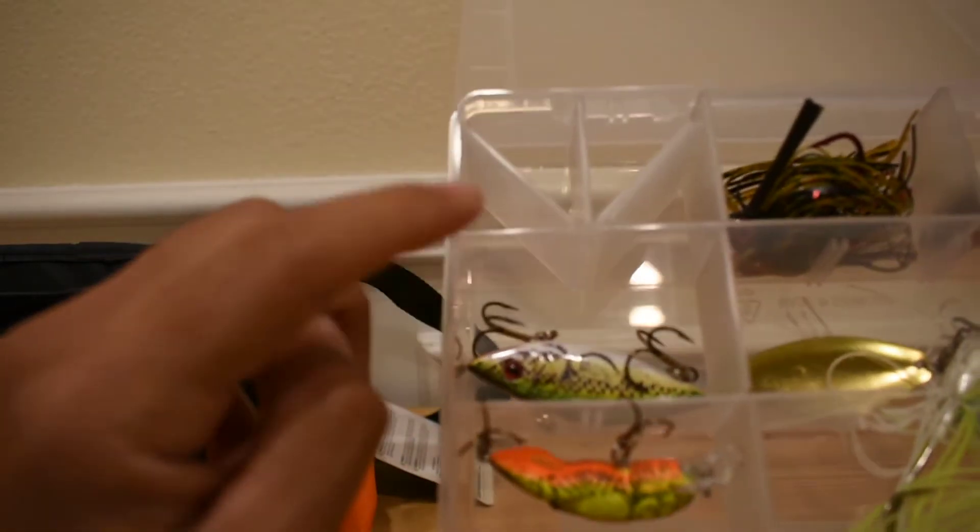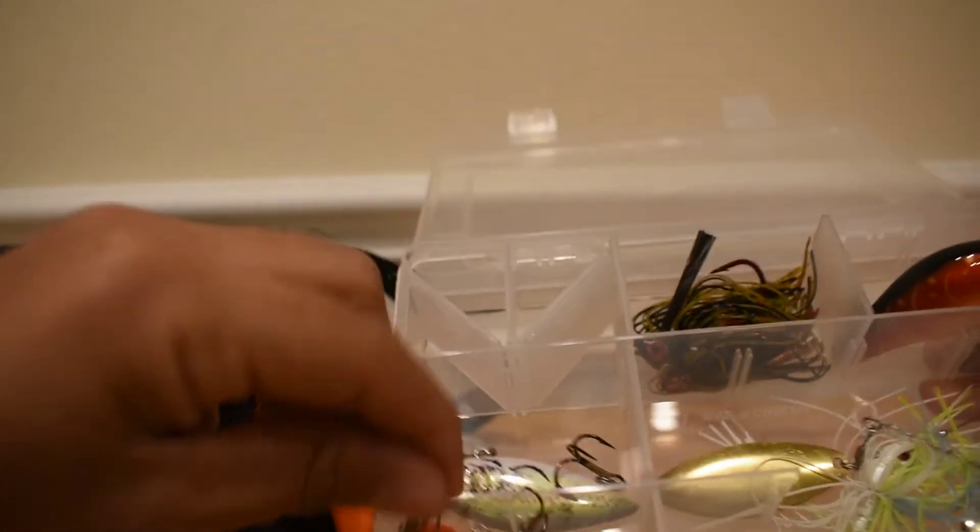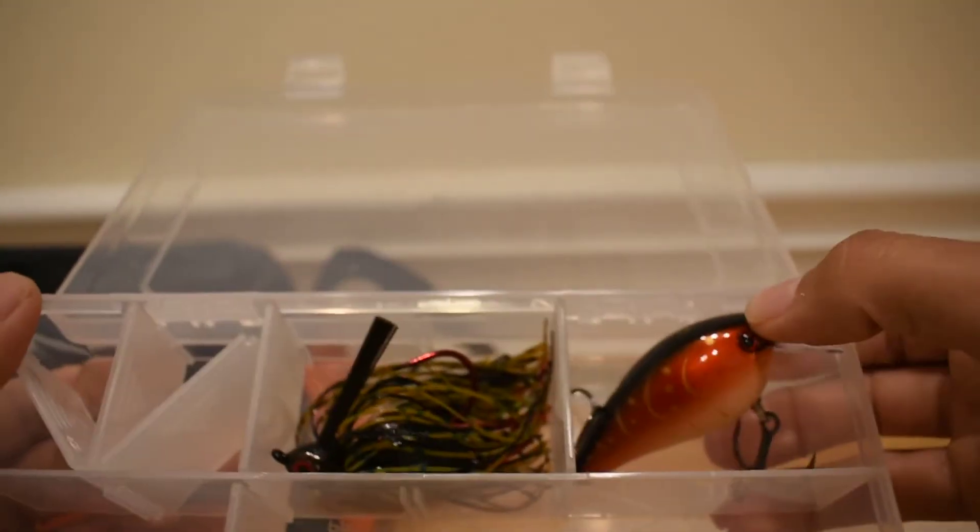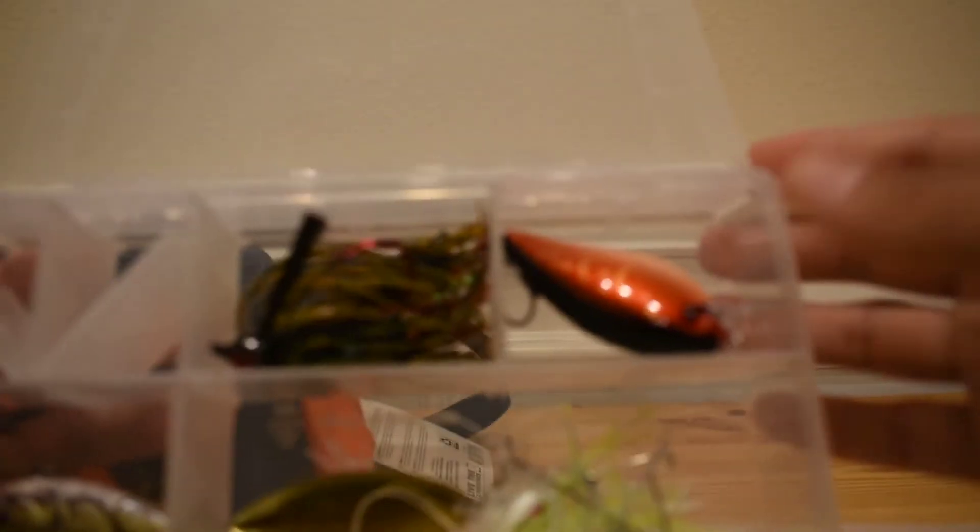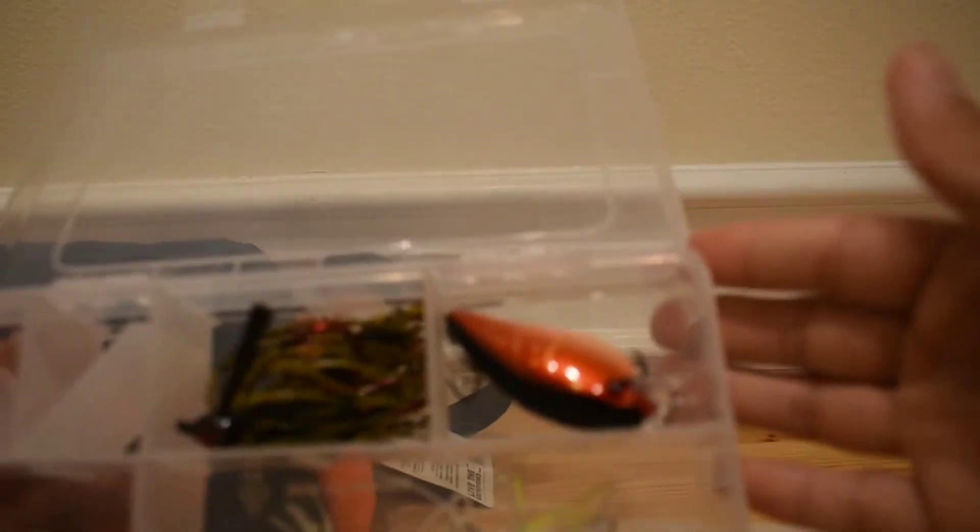There you can see a small lip lifts, here's a little rebel lure, there's a jig, there's a 1.5 KVD square bill. So they do fit in there pretty nicely.